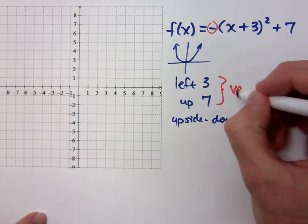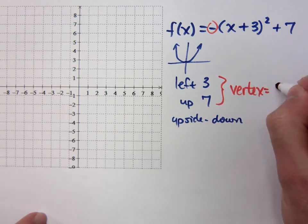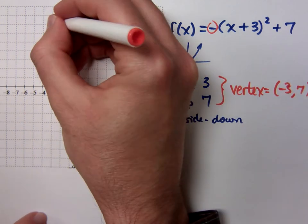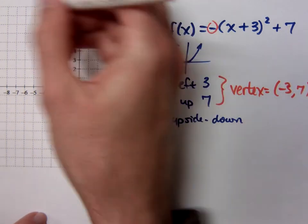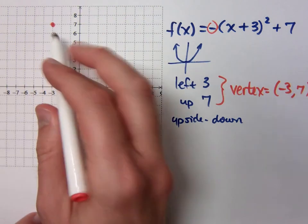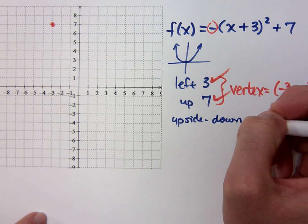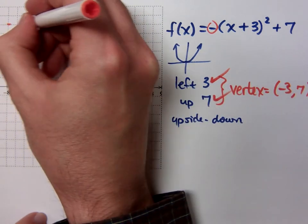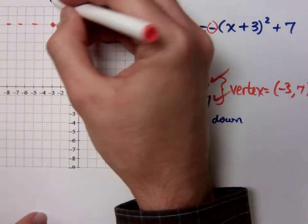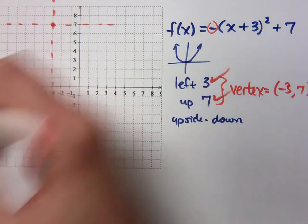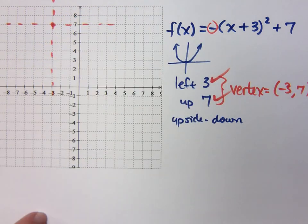So this tells me that my vertex equals negative 3, positive 7. So there's my negative 3, positive 7. I've already used these, I don't need them anymore. So this is what I call my new origin, because it's from this point that I'm going to get everything else.